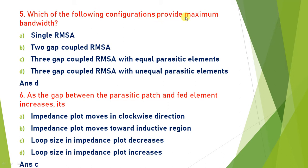Which configuration provides maximum bandwidth? Generally, a three gap coupled RMSA with unequal parasitic elements provides maximum bandwidth. This is derived from theory of gap coupled rectangular microstrip antennas. As the number of gap coupled antennas increases, efficiency and bandwidth improve maximally. So the answer is D.